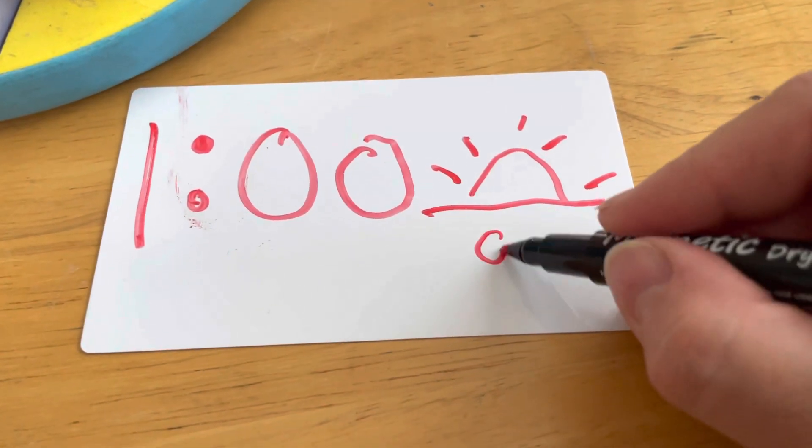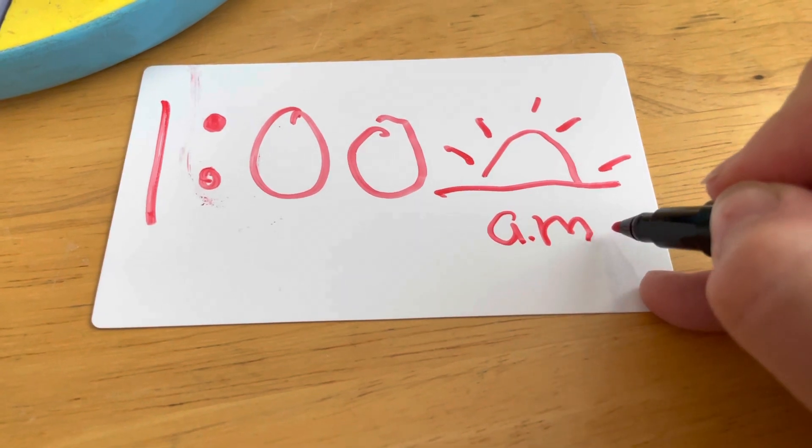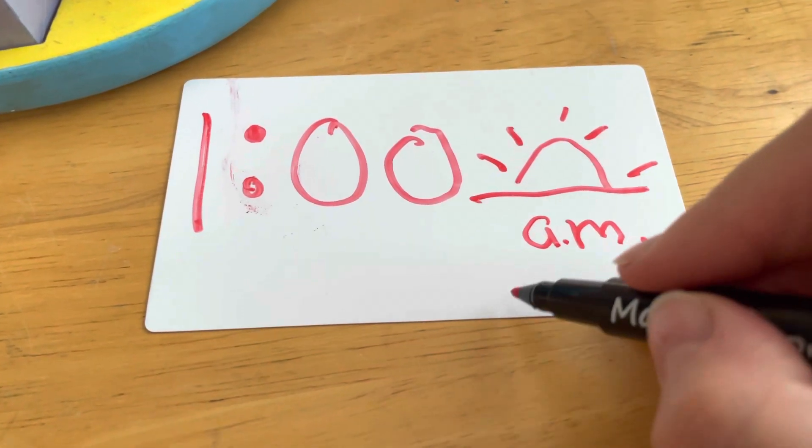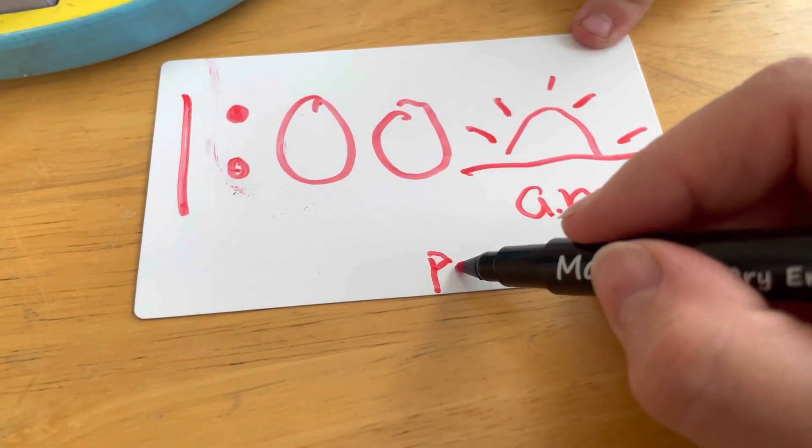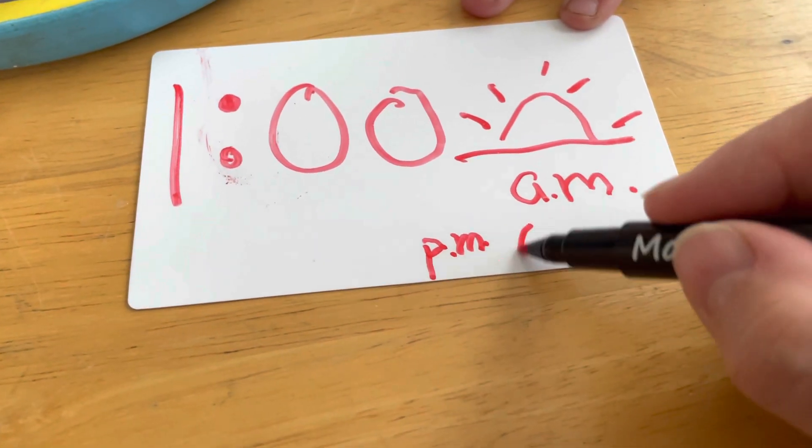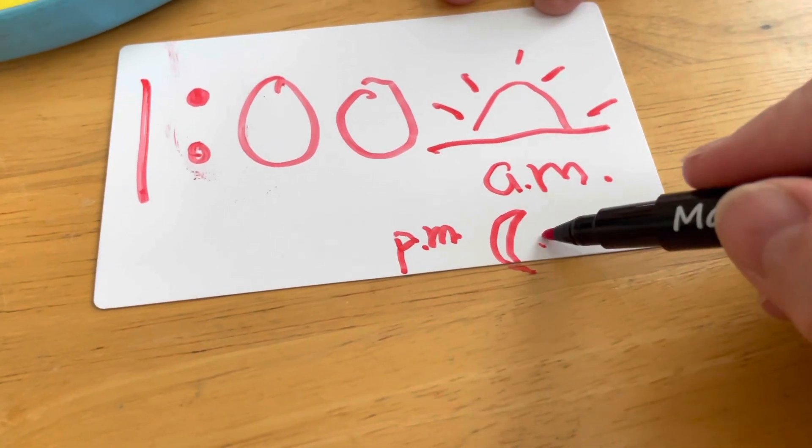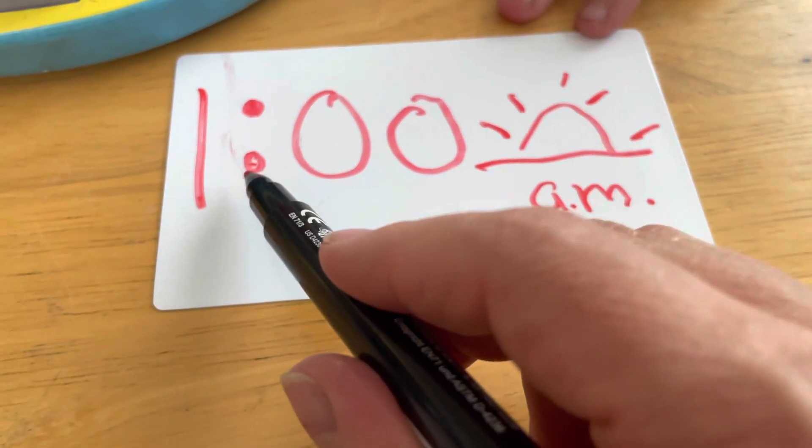Can you hold the card because it's wiggling around? That would be AM, one o'clock AM. Or if it's PM, PM is when the moon is out. Yeah, when it's big and beautiful. Okay, so it could be one o'clock.